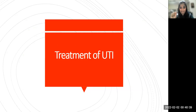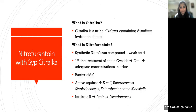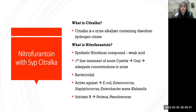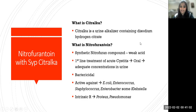First and foremost, in the treatment of UTI, it is very common practice to give nitrofurantoin with Syrup Citralka. Basically, Citralka is given to reduce the burning micturition. Citralka is nothing but a urine alkalizer which contains disodium hydrogen citrate — it will alkalinize the urine.